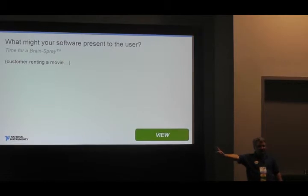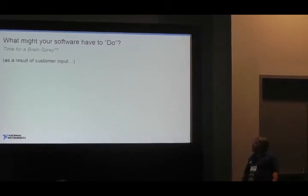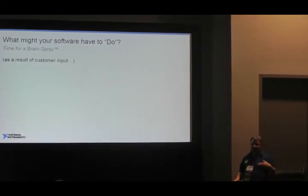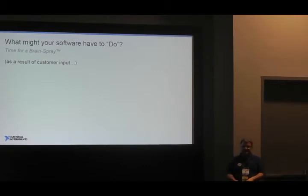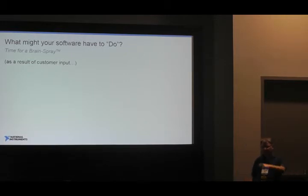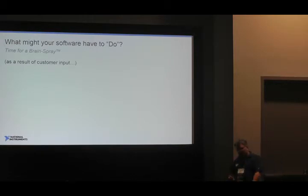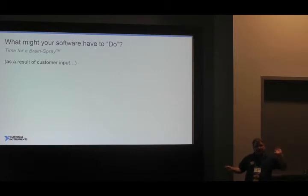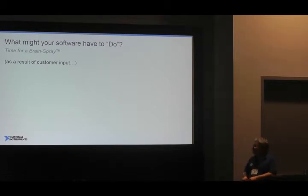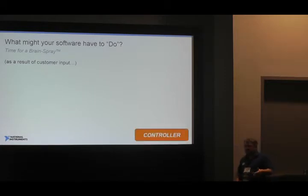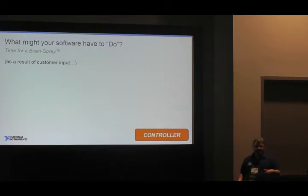There's stuff that you know — the model — and then there's stuff that you're presenting at this moment — the view. What might the software have to do? Changes to reality: removing a disk from inventory, charging the customer, updating inventory, maybe updating prices. Those are examples of controller work. Basically, changes to the reality of the device is controller. Presentation of that reality is view.